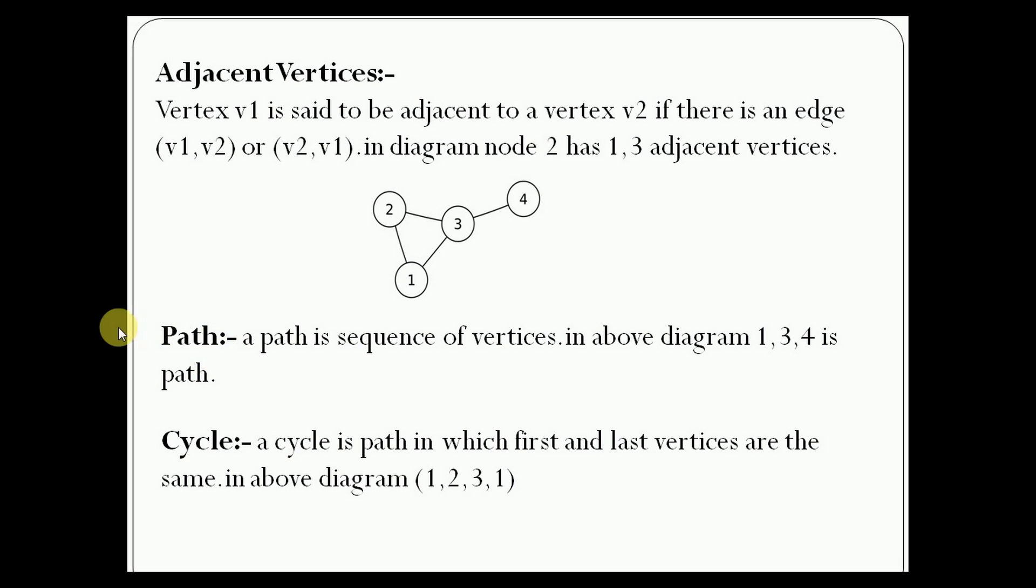A path is a sequence of vertices. In the above diagram, 1, 3, 4 is the path between 1 and 4.